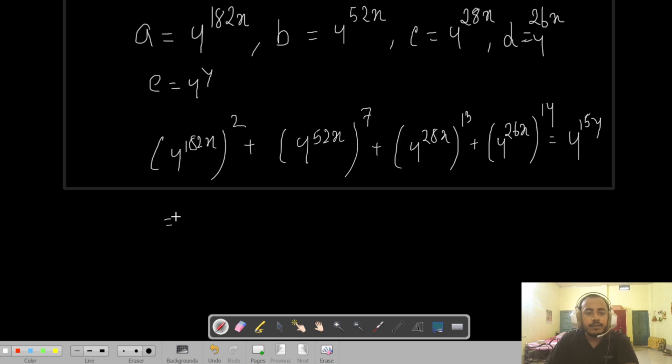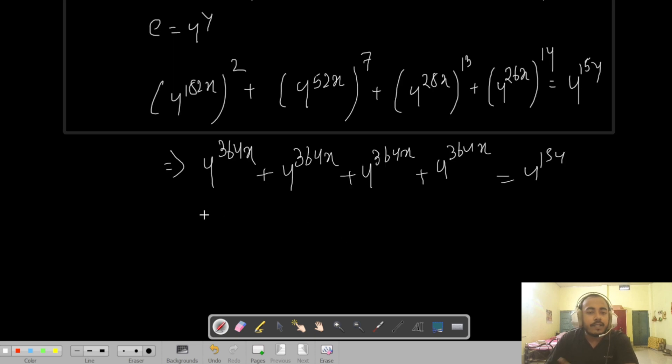The numbers have been chosen carefully so that each of these terms are 4 to the power 364x. The reason we chose 4 as the base is because there were 4 terms, and now you can understand 4 same things added together is basically 4 times 4 to the power 364x, which equals 4 to the power 15y.